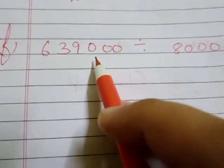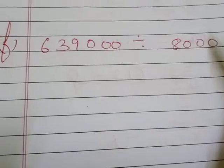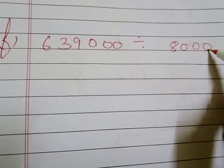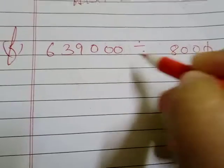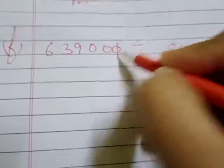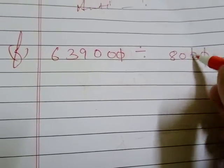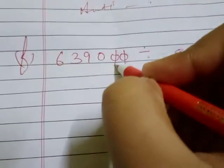Question number F: If you see, we will cancel the zeros first of all. So this ones place zero will be cancelled with this side ones place zero. Then tens place zero will also be cancelled with here tens place zero.